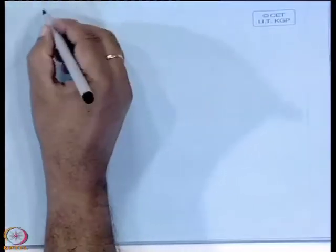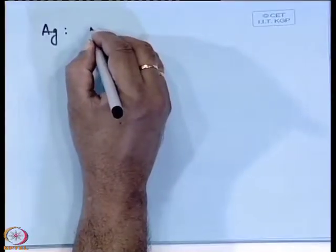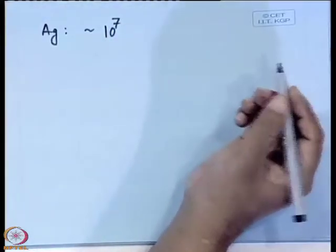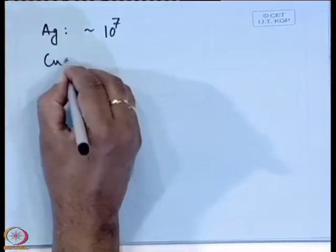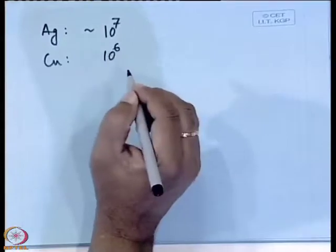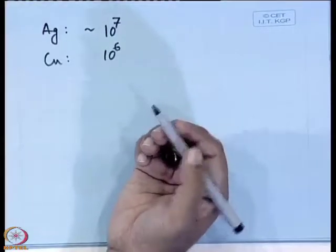Let us look at the electrical conductivity of some materials, starting with metals. Silver has conductivity of the order of 6–7 × 10⁷. Copper is around 10⁶, gold is around 10⁶, and aluminum is around 10⁴ (all in Ohm·meter inverse units). Metals are very highly conducting.